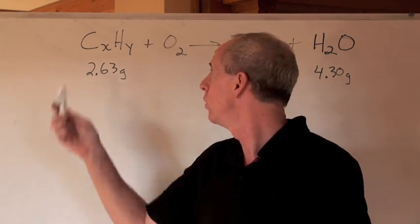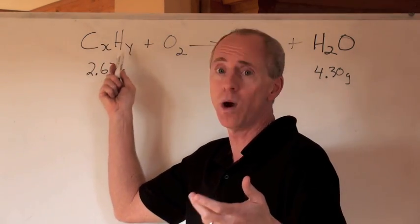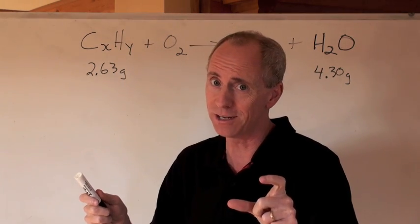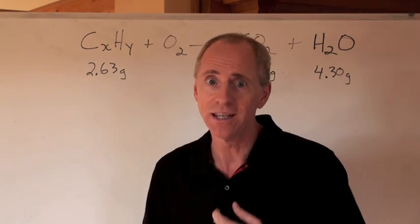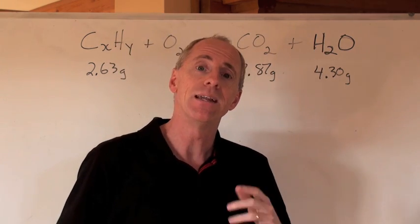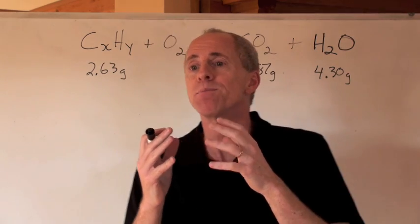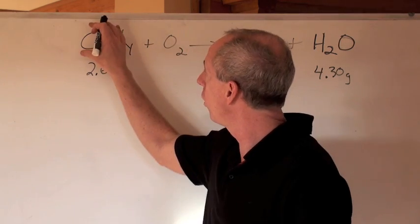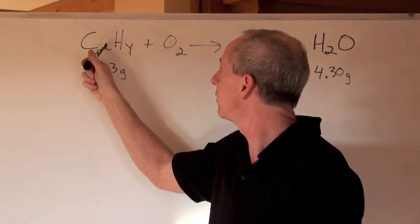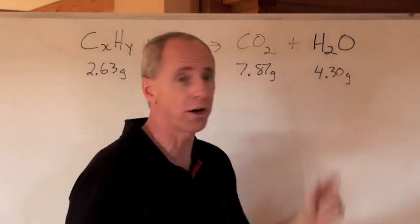I got a compound. It's got carbon and hydrogen in it, and I don't know what the formula is. All I know is that when I take that compound, which I'm going to abbreviate CxHy, and combust it, it forms carbon dioxide and water. The question will say that you have to take for granted that all of the carbon in the combustion of this hydrocarbon gets found in the carbon dioxide, and all of the hydrogen gets found in the water.